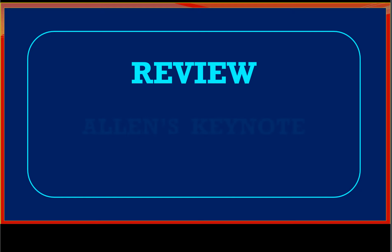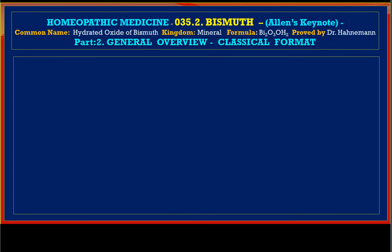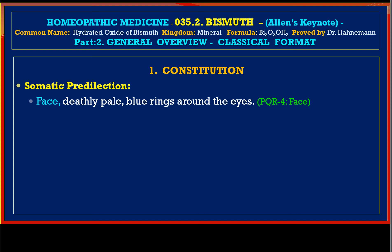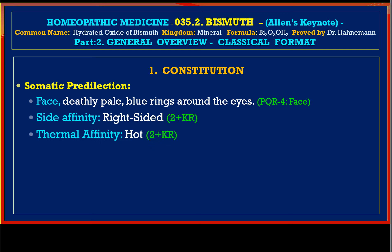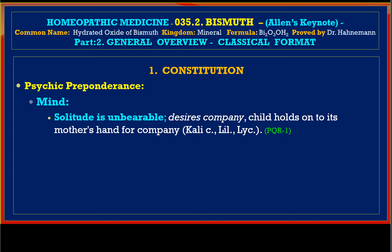Let us go to the review from Allen's keynote with a few add-on details. For constitution, the physical characteristics of bismuth: face deathly pale, blue rings around the eyes. The side affinity is right-sided, thermal affinity is hot, and psychic preponderance shows temperament is anxious. Mentally, the patient finds solitude unbearable, desires company, and the child holds on to his mother's hand for company. Similar symptoms are encountered in Calc, Lilium-tig, and Lycopodium.